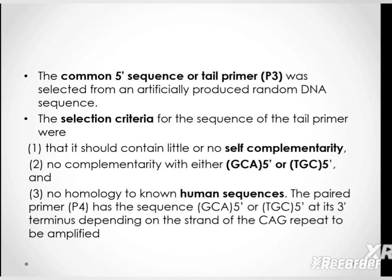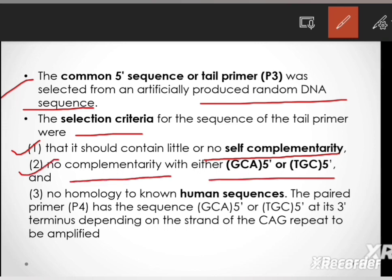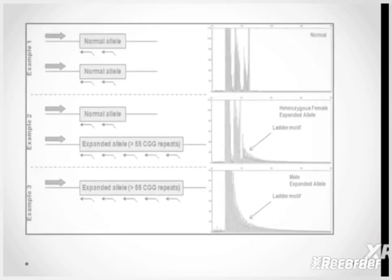Understanding the importance of the tail primer, it is very important to understand how tail primers are selected. They are random DNA sequences. The following selection criteria need to be followed before designing the P3 primer: it should contain little or no self-complementarity, there should be no complementarity with the target or template sequence, and there should be no homology with the human sequence.